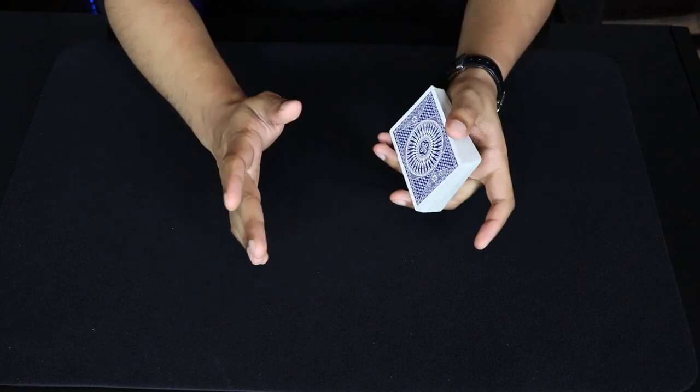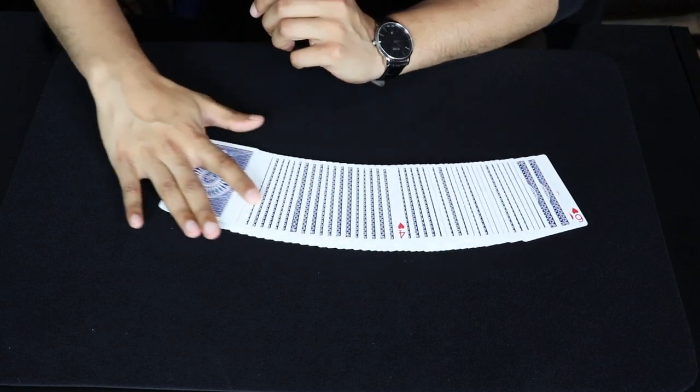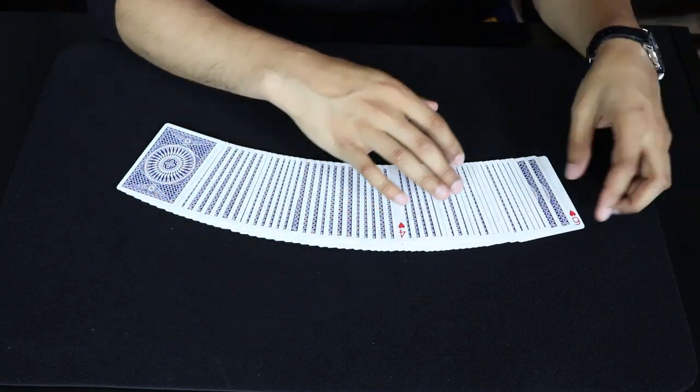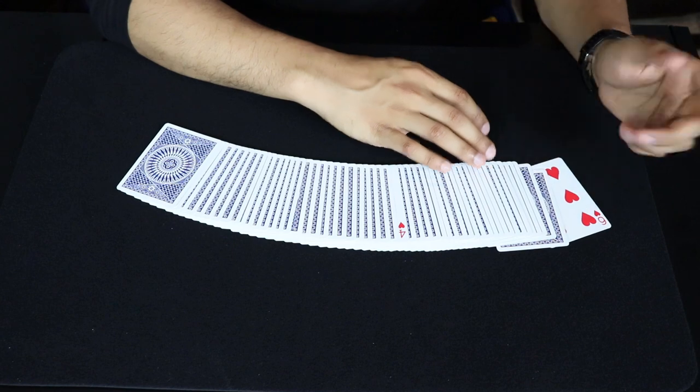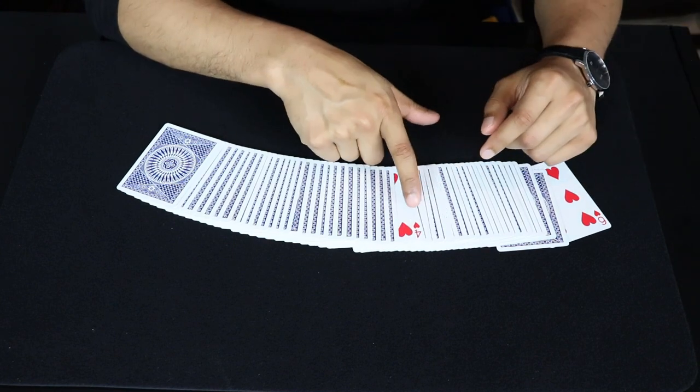And one problem that you're probably going to run into is when you're spreading the cards out, you're going to see that this top card also is going to reveal itself along with the spectator's card.